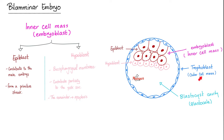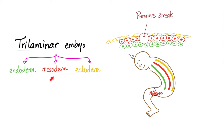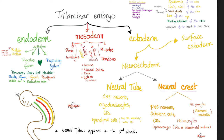Here is the bilaminar — please pause and review. And here is the trilaminar: endoderm, mesoderm, ectoderm. The ectoderm is on the outside, giving you the epidermis of your skin as well as the nervous system. The endoderm is on the inside, giving you all the viscera: digestive system, respiratory system, epithelium of the heart, pancreas, liver, gallbladder, tonsils, thymus, thyroid, parathyroid, etc.